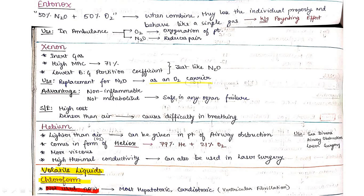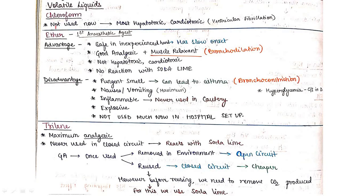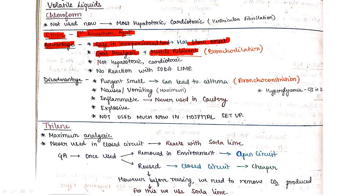Chloroform is not used now because of hepatotoxicity and cardiotoxicity. Coming to ether, this was the first anesthetic. Advantages of ether: it is safe in inexperienced hands because of slow onset of action. It has good anesthetic power, muscle relaxant power, is not hepatotoxic or cardiotoxic like chloroform, and has no reaction with soda lime.